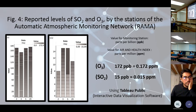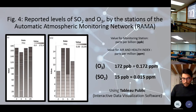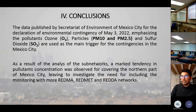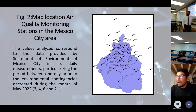According to the standard, if any single monitoring station records high contamination levels, the city-wide contingency must be declared — the location of the station does not matter. The picture also indicates more stations are needed in the southern part of the city, as the Santa Fe station is located in the north.